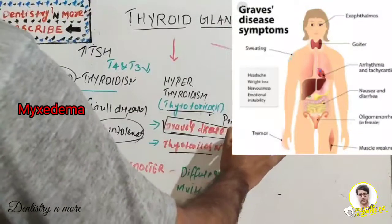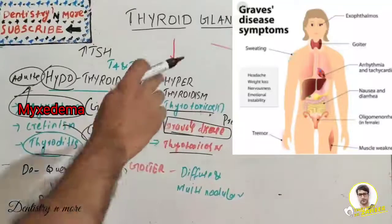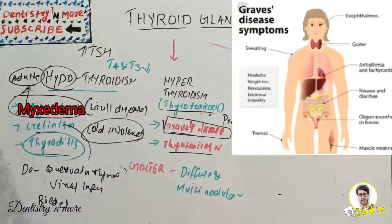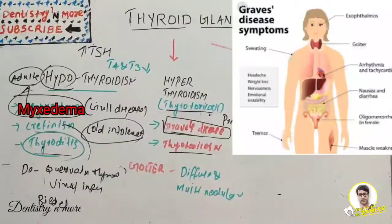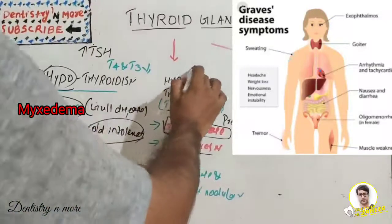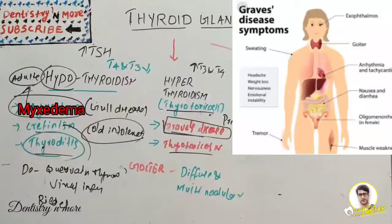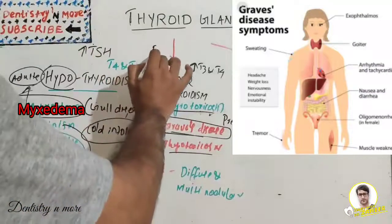Graves' disease has a peak incidence of 20–40 years with female predilection. The pathogenesis is autoimmune — thyroid stimulating antibodies act like TSH, leading to increased formation of T3 and T4 and increased growth of the thyroid gland. The most striking feature of Graves' disease is exophthalmos.